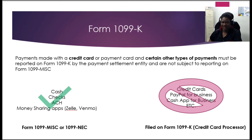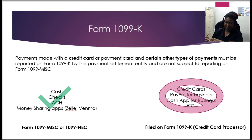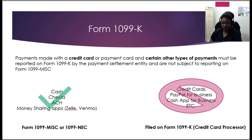The 1099-K covers payments made with a credit card. Normally the credit card processor is the one who issues that 1099-K to the business owner, and the business who paid the other business owner will not need to file that on a 1099 NEC. The types of payments reportable on the new 1099 NEC are things like cash, checks, ACH, or money sharing apps such as Zelle or Venmo. If you paid by credit card, PayPal for business, Cash App for business, or any credit card processor, then that processor will issue the business a 1099-K.